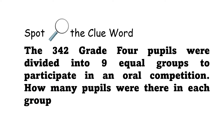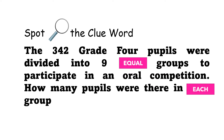Another one — spot the clue word. The 342 Grade 4 pupils were divided into 9 equal groups to participate in an oral competition. How many pupils were there in each group? The clue words are 'equal' and 'each,' and they tell us to use division.